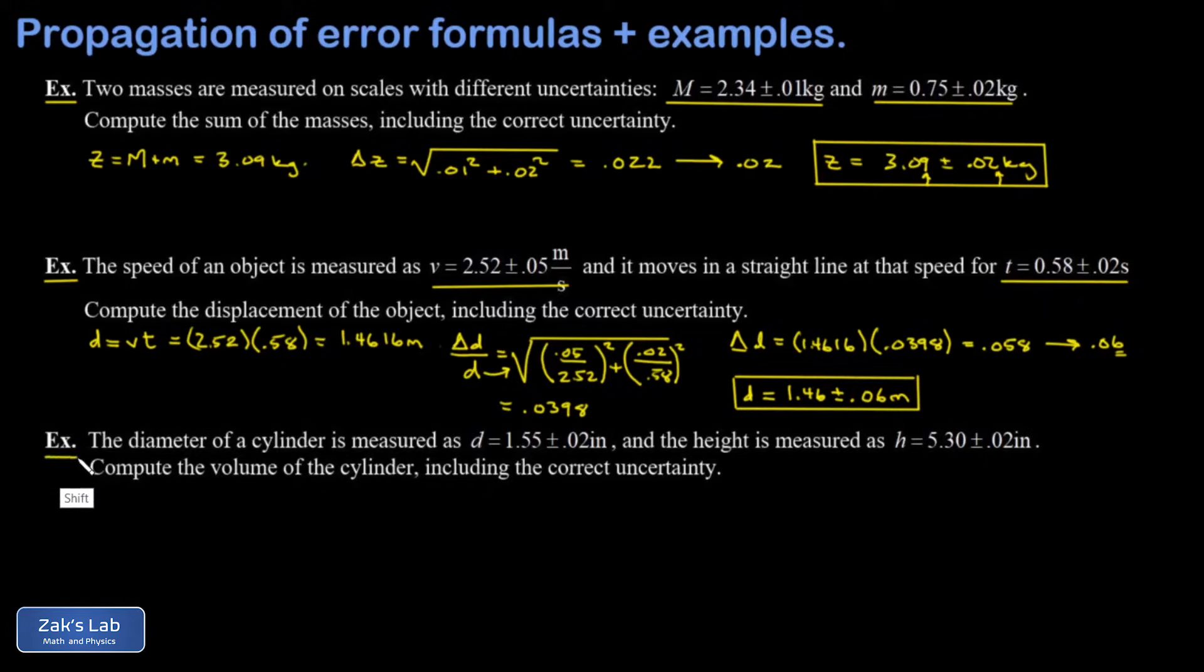Finally, in our last example, we have a formula that involves exponents. So I've measured the diameter of a cylinder as D equals 1.55 plus or minus 0.02 inches. And then the height is measured as 5.30 plus or minus 0.02 inches. I want the volume of this cylinder, including the correct uncertainty.